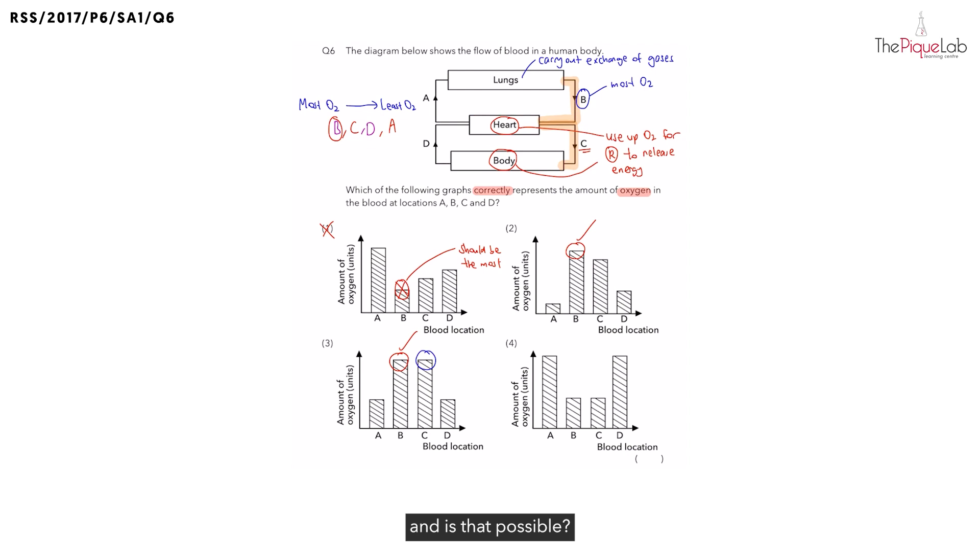And is that possible? No. We know C should have more or less oxygen than B. C should have less oxygen. So let's write this down. It should have less oxygen than B. So we can also cross three out.